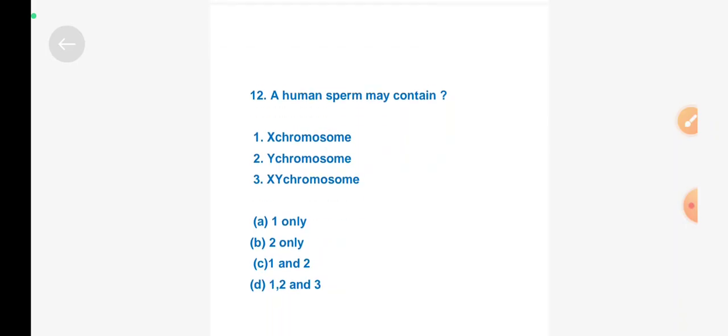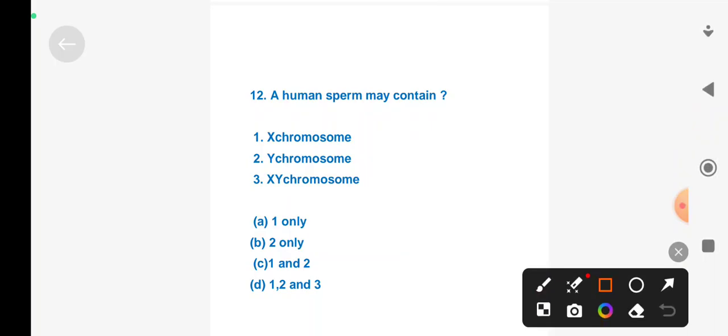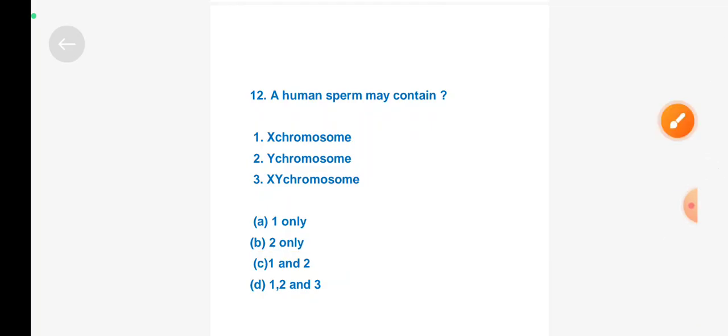Next question: A human sperm may contain - Option A: X chromosome, Option B: Y chromosome, Option C: X and Y chromosomes. Right answer is Option C, X chromosome and Y chromosome.